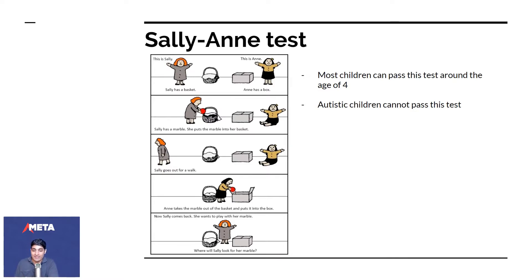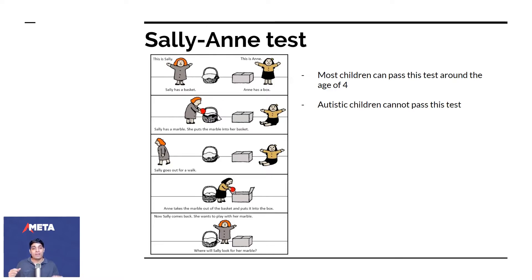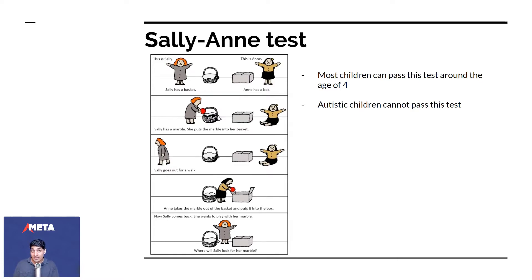She doesn't know that Annie has removed the marble and put it in the box. Sally has no idea of that information because she went out and was not there. But autistic children, surprisingly, cannot pass this test — nor can children below the age of four — because they will say Sally is going to look inside the box.